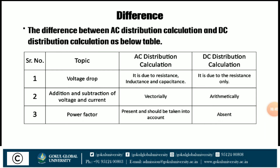Now we discuss the difference between AC distribution calculation and DC distribution calculation. First, voltage drop: in AC distribution, it is due to resistance, inductance, and capacitance, while in DC distribution it is due to resistance only. Second, addition and subtraction of voltage and current: in AC distribution it is done vectorially, while in DC distribution it is done arithmetically. Third, power factor: in AC distribution the power factor is present and must be taken into account, while in DC distribution the power factor is absent.